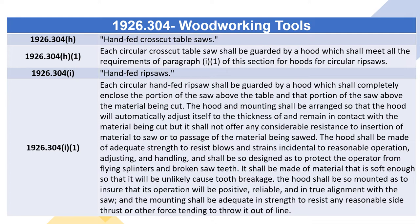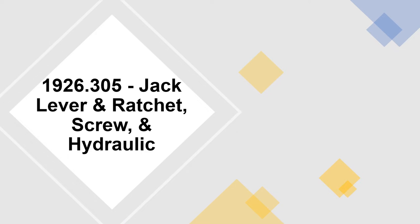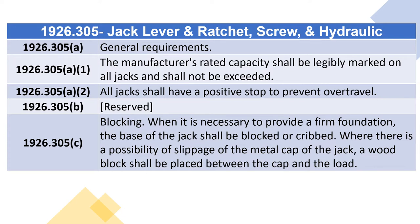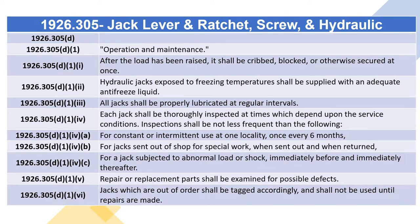1926.305 Jacks - Lever and Ratchet, Screw, and Hydraulic. 1926.305(a) General Requirements. 1926.305(a)(1): The manufacturer's rated capacity shall be legibly marked on all jacks and shall not be exceeded. 1926.305(a)(2): All jacks shall have a positive stop to prevent over travel. 1926.305(c) Blocking: When it is necessary to provide a firm foundation, the base of the jack shall be blocked or cribbed. Where there is a possibility of slippage of the metal cap of the jack, a wood block shall be placed between the cap and the load.